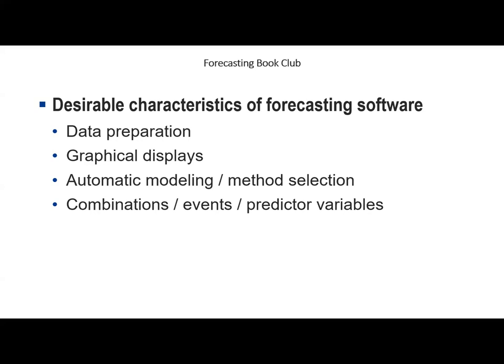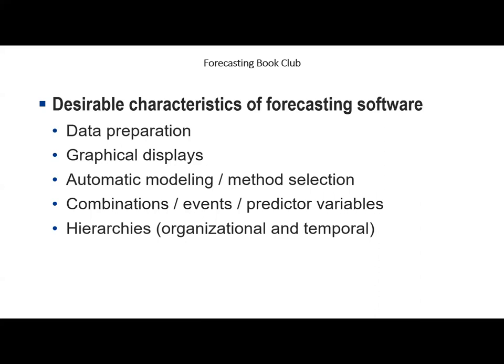Planned events like price changes or promotions should be noted in history so you can determine their approximate effect, and known future events can be used in modeling to create more accurate forecasts. There may also be other predictive variables such as weather or economic conditions. It's hard to imagine large-scale forecasting without time series organized into hierarchies — a product hierarchy where finished items roll up into groups, categories, and brands, and a location hierarchy where customer ship-to locations roll into warehouses, distribution centers, and manufacturing plants.